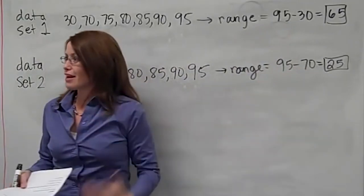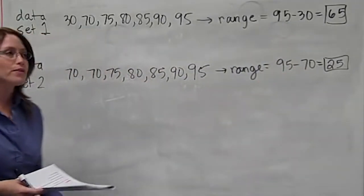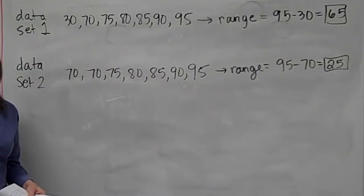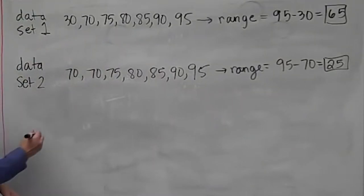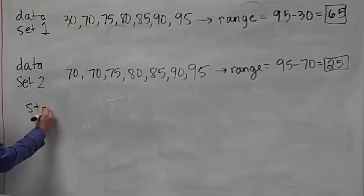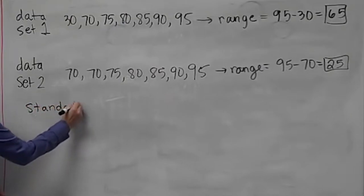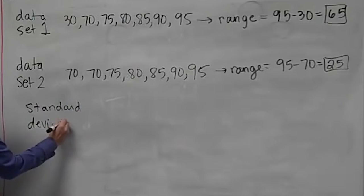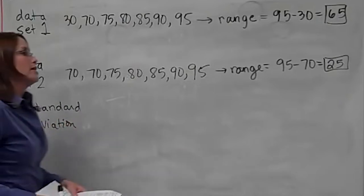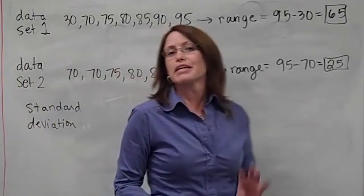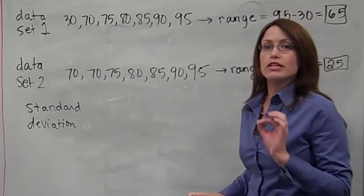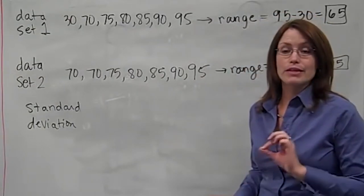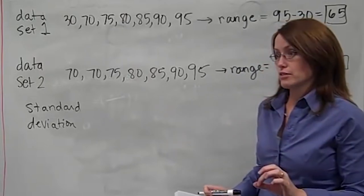But the range doesn't tell you a lot about each individual number — there's such a difference in range even though only one value changed. So there has to be another measure of spread. Range is one measure; the second one is called standard deviation. Standard deviation measures spread as well, but it uses every data value in your data set, not just the highest and lowest.